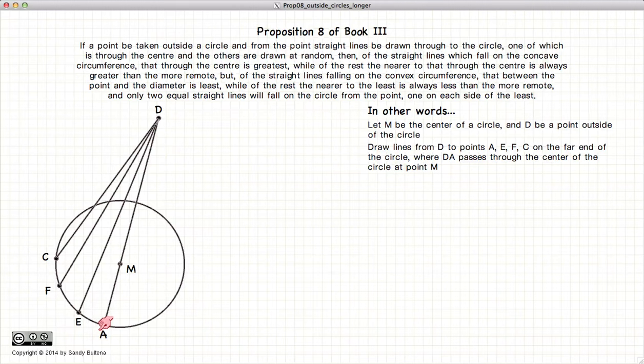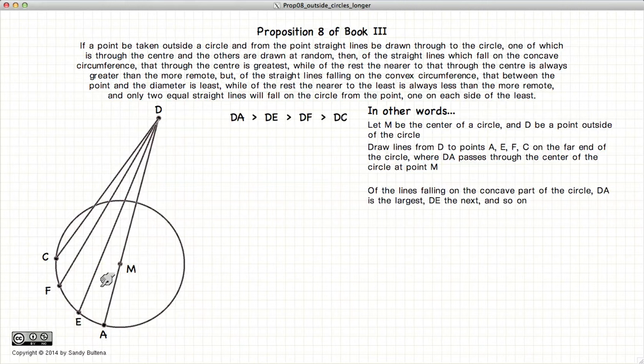So DA will be greater than DE. And as you move away from the center of the circle, these lines will get progressively smaller. So DA will be larger than DE, which will be larger than DF, which will be larger than DC.